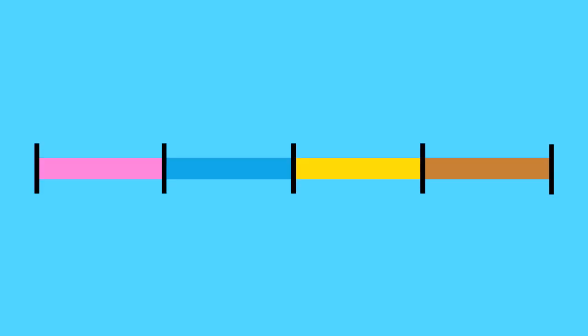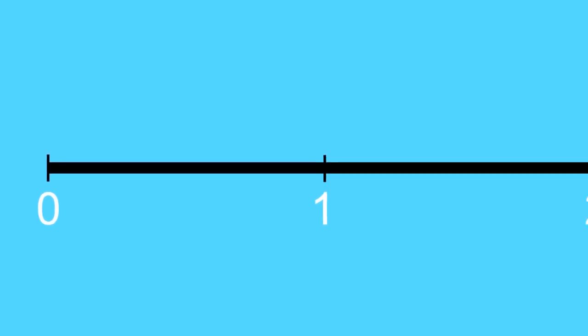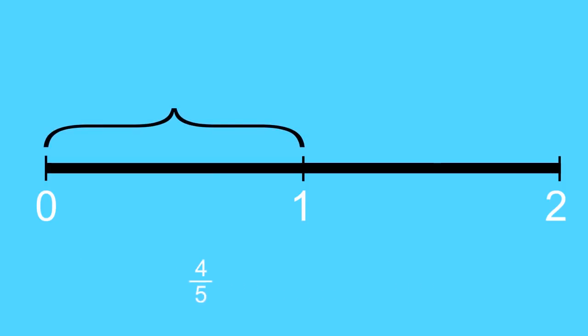Let's do one last problem. This time, we're going to start with a number line that goes from 0 to 2. How would we show 4 fifths? First of all, remember that 4 fifths is between 0 and 1. So it's going to be in this part of the number line. So, let's divide this part of the number line into fifths.